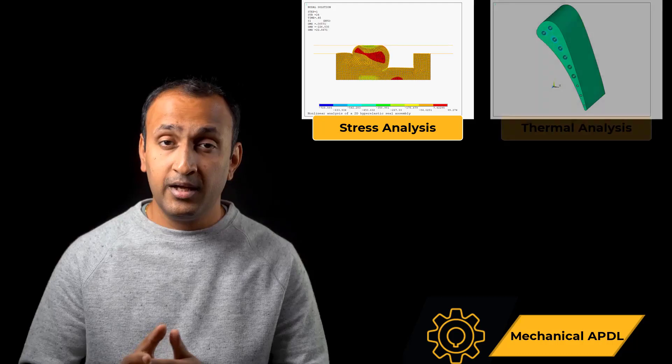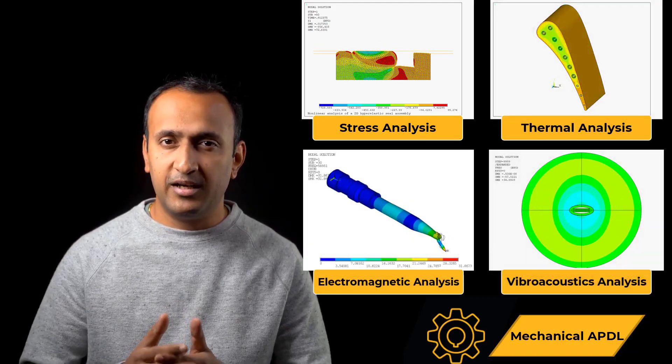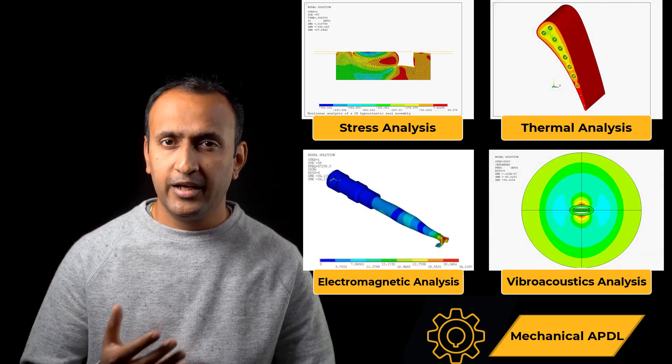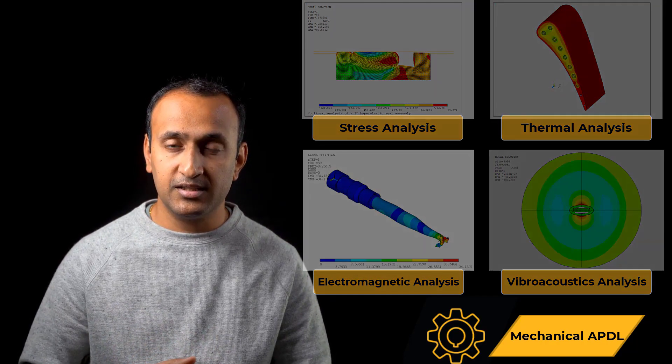Mechanical APDL, or informally shortened as MAPDL, is an industry-leading general purpose finite element solver used for structural, thermal, electromagnetic, acoustics, and other multiphysics simulations. It also has built-in geometric modeling and meshing capabilities and supports parametric modeling.